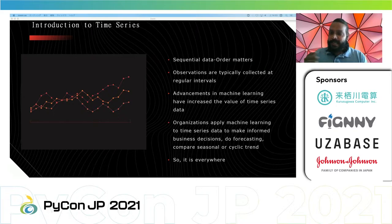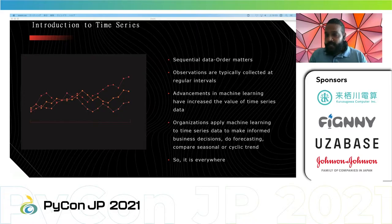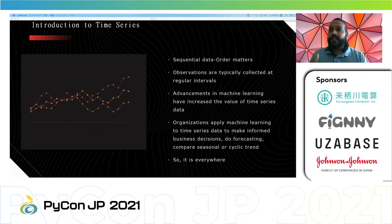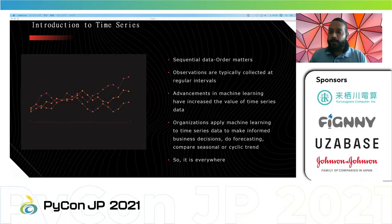When talking about time series data, the main aim is to estimate how a sequence of observations will continue in the future — for example, weekly, daily, yearly, or monthly. Weather data might be updated every 10 minutes or every hour; IoT sensor data generates continuously. Advancements in machine learning have increased the value of time series because so many prediction problems involve a time component.